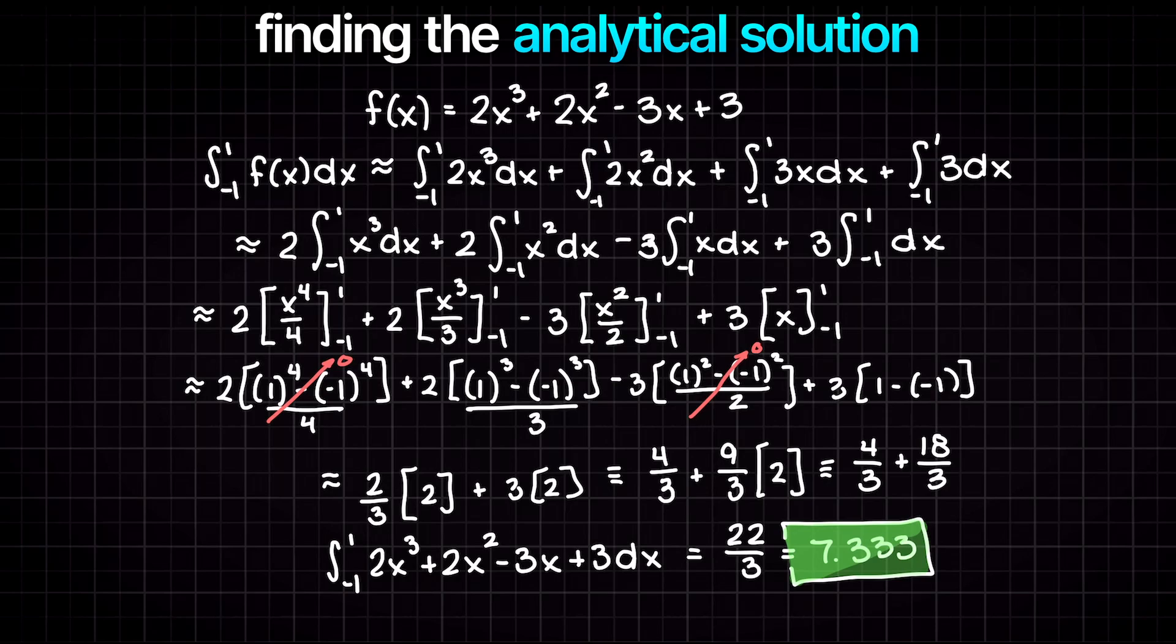But why is this? We said that we were only approximating our solution, how do we end up getting the exact solution? When using the Simpson's one-third rule on a polynomial of third order or lower, we actually get the exact solution and not just an approximation. Which is cool and a useful thing to know.